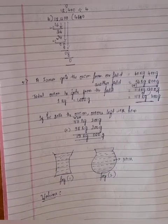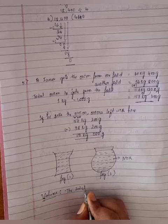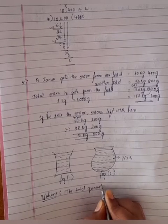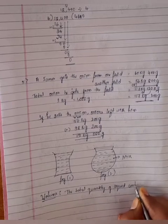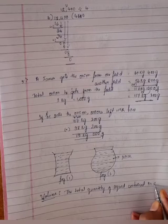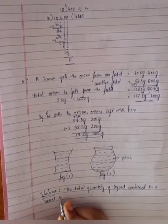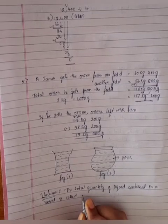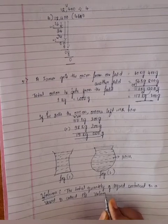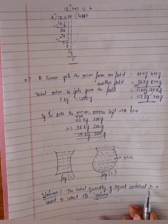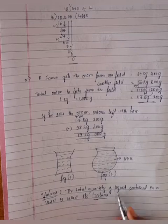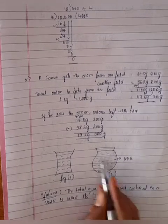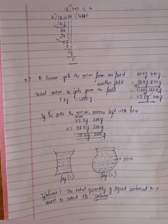What is volume? Volume means the total quantity of liquid contained in a vessel is called its volume. Milk is a liquid contained in a vessel. So the measurement of volume is expressed in cubic units.